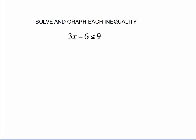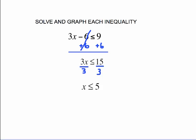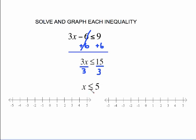Now let's solve some inequalities. The steps are the same as solving an equation — get x alone by doing the opposite. For 3x minus 6 less than or equal to 15, undo the subtracting 6 by adding 6 to both sides, giving 3x less than or equal to 15. Then divide both sides by 3, giving x less than or equal to 5. To graph: x less than or equal to 5 gets a solid circle on 5, and since it's less than, shade to the left. With the bracket notation, use a square bracket on 5, still shading to the left.